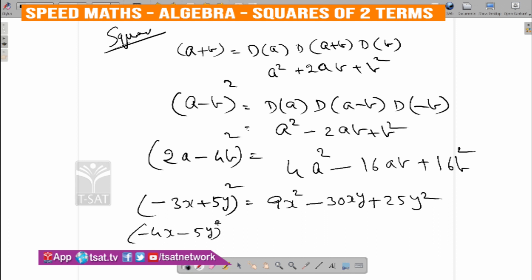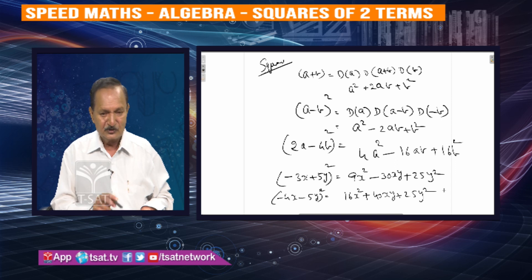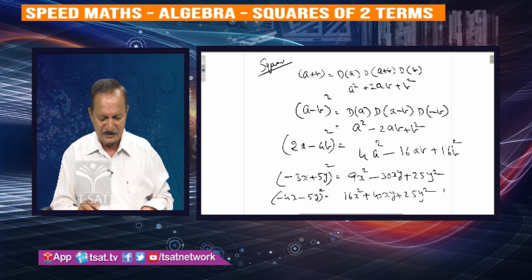Minus 4X minus 5Y whole square: minus 4X gives 16X square. Then 2AB — 2 into minus 4 into minus 5: minus 8 into minus 5 gives plus 40XY. And finally 5Y square gives plus 25Y square.